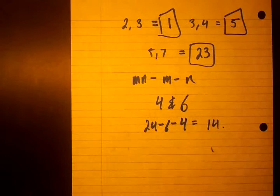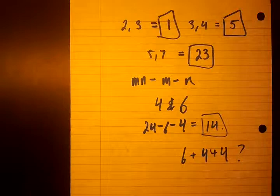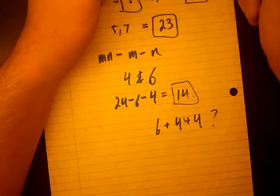It says 14 is the largest number that we cannot make, but right away we see we can make 14, no problem. Just 6 plus 4 plus 4. So we see that this doesn't work. So we're going to look at why it doesn't work now.